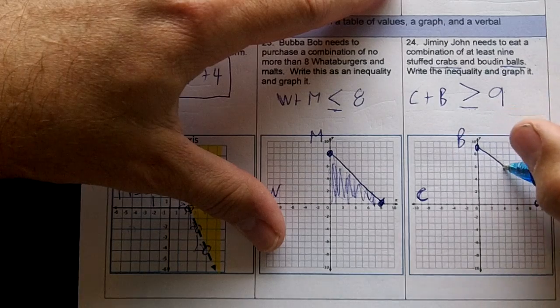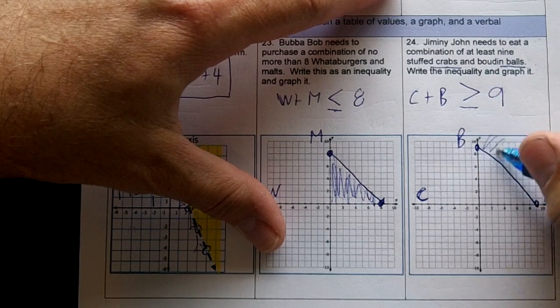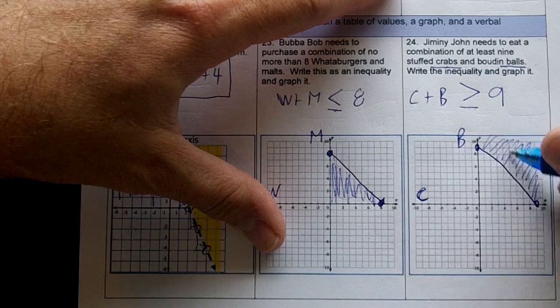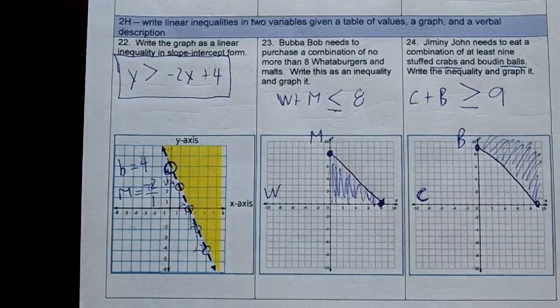So we're going to connect the lines, and I need to eat more than this so the graph would be shaded up. So any combination of boudin balls and stuffed crabs up here would be greater than or equal to nine.